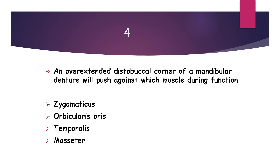Next question: an overextended distal corner of a mandibular denture will push against which muscle during function? The options are buccinator, orbicularis oris, temporalis, and masseter.